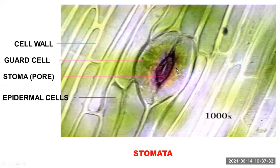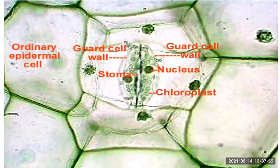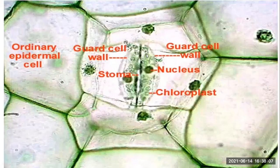Around the pore-like structure we have guard cells — two guard cells are generally present. Above the guard cells are subsidiary cells, and above those are epidermal cells. These are ordinary epidermal cells which do not have any stomata. In another microscopic view, you can see one stoma with two guard cells and white colored epidermal cells above them.